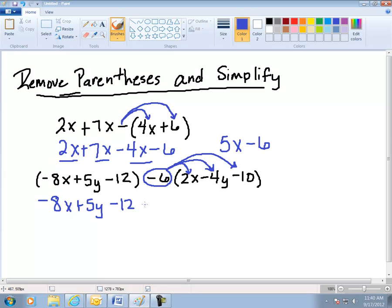Negative 6 times 2x gives me a minus 12x. Negative 6 times a negative 4y gives me a positive 24y. And negative 6 times negative 10 gives me the positive 60.